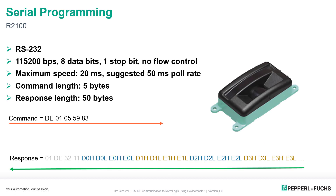The R2100 has a very simple RS-232 serial protocol. You send five bytes in a command and you get a 50-byte response. If you don't send a command, the R2100 will do nothing and send you no information. You could set a max pull rate of 20 milliseconds, but we don't suggest this — the beams won't update that fast anyway. Internally, we suggest no faster than 50 milliseconds. The baud rate is fixed — you cannot change it: 115200, 8, none, 1.